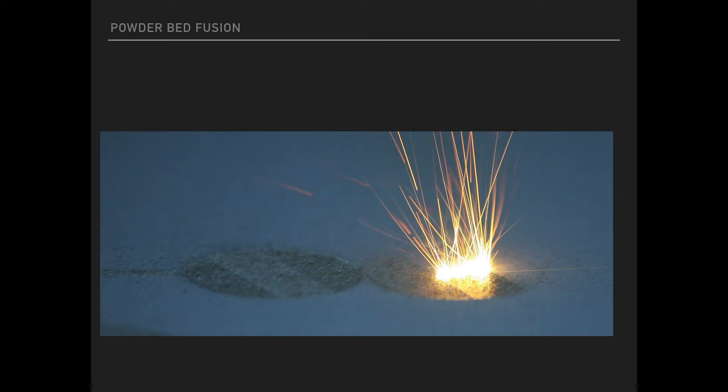There are four main types of powder fusion mechanisms. They are solid state sintering, chemically induced sintering, LPS and partial melting, and finally, full melting. We're going to go over those four in a little more depth now.